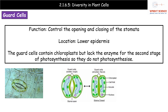The second type of specialized cell are the guard cells, which control the opening and closing of the stomata — the little pores on our leaves. These are typically found on the lower epidermis. Guard cells contain chloroplasts but lack the enzyme necessary for the second stage of photosynthesis, so they do not carry out photosynthesis themselves. When guard cells are open they are turgid; when closed they are flaccid.